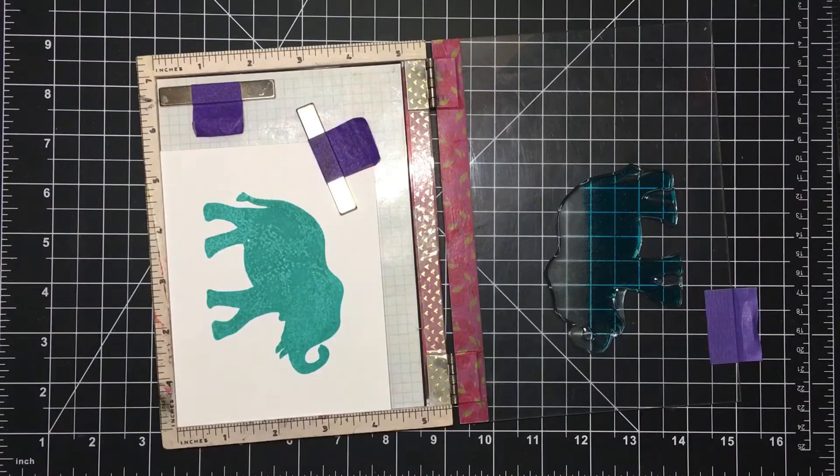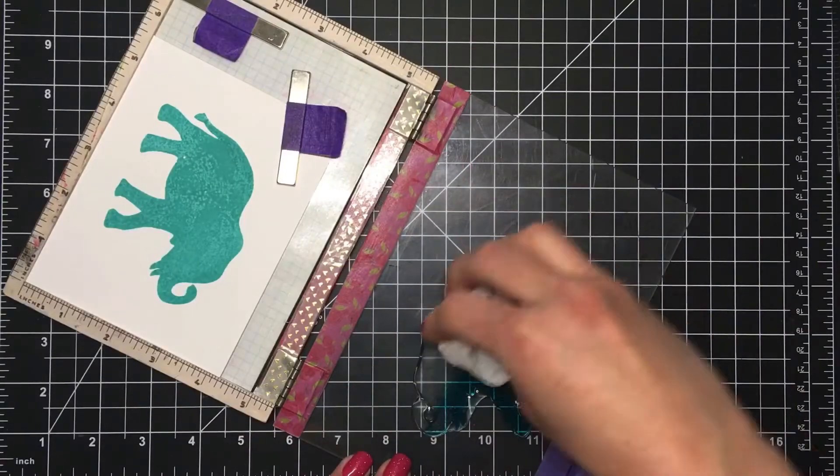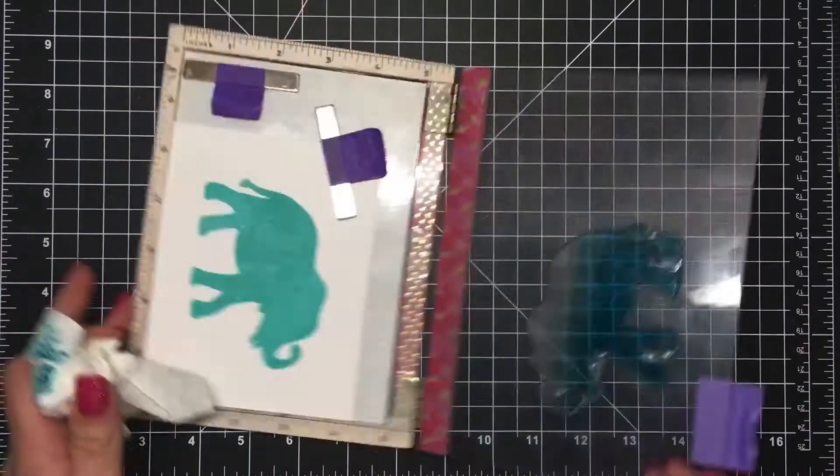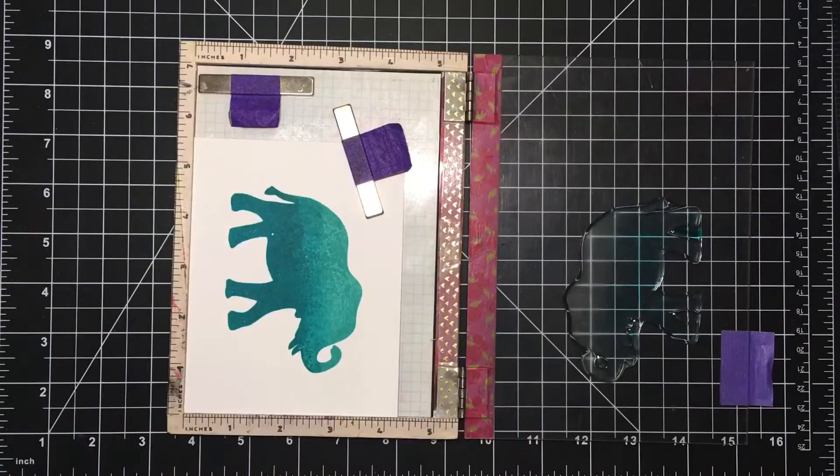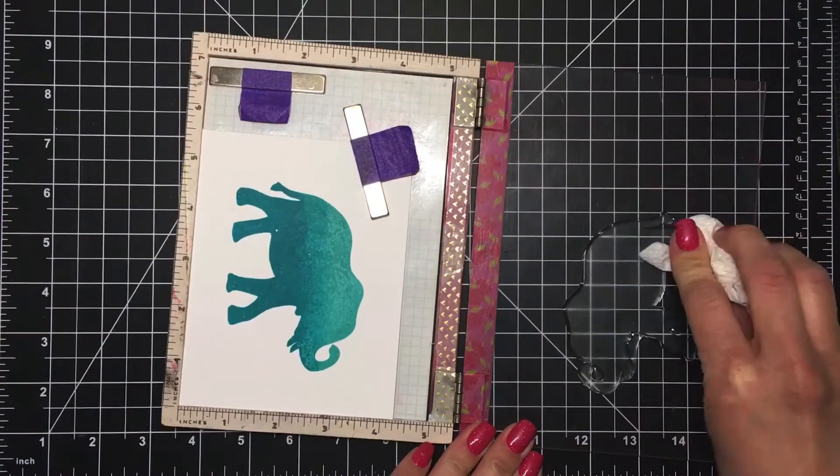I'm using a paper towel to dab across the top of that ink line to soften it up a bit so that it'll blend into the lightest color better, and then I will wipe that off.